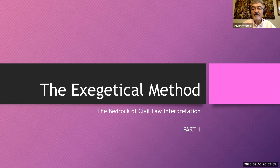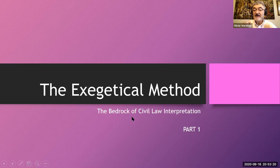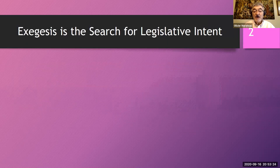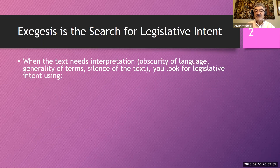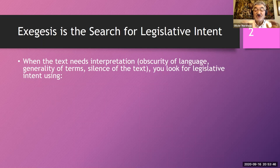We're back to continue the discussion of exegesis, the exegetical method — the bedrock of civil law interpretation, as I like to call it. So central and so essential it is. This video is split in two parts to avoid having it too long. As we've seen in the first video, exegesis is the search for legislative intent. When the text needs interpretation — because of obscurity of language, the generality of terms, or the silence of the text — you look for legislative intent. And here are the tools that you're going to look at.